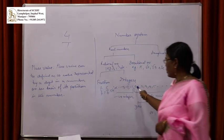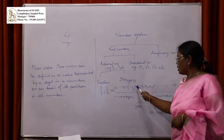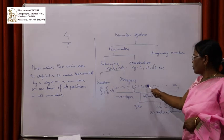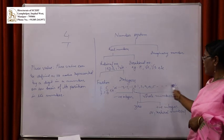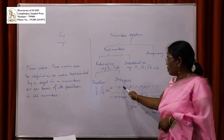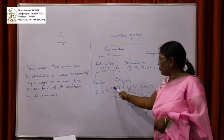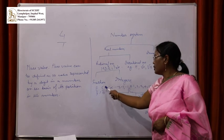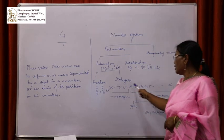Integers include positive numbers: 1, 2, 3, 4, 5 up to infinity; zero; and negative numbers: minus 1, minus 2, minus 3 up to negative infinity. These together are the integers.